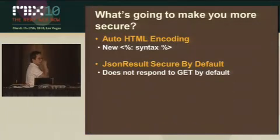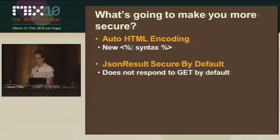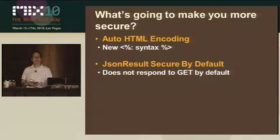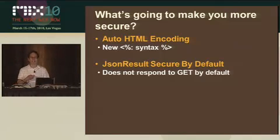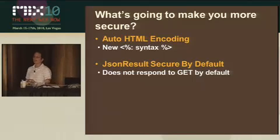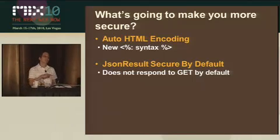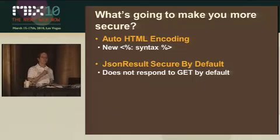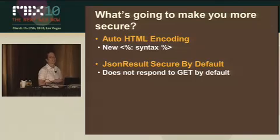JSON result is secure by default. One of the changes we made in MVC2 — and this is something you should really be aware of because I've heard from several people that it bit them when upgrading — is that we do not send JSON if you just call return JSON of some object in response to GET requests. We'll throw an exception.